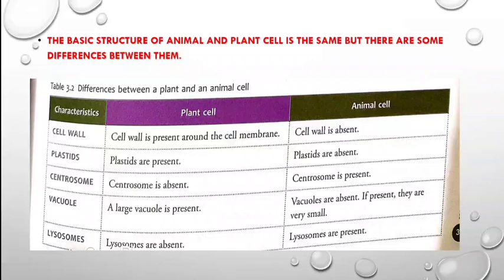There are some differences between plant and animal cells. The table over here shows the basic differences between a plant cell and an animal cell. The first column shows the characteristics, the next column is for plant cell, and the other side is for animal cell. Let us see them one by one.